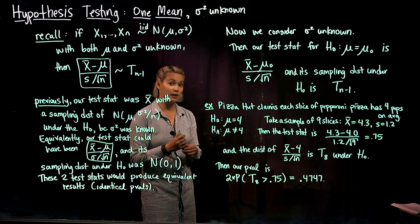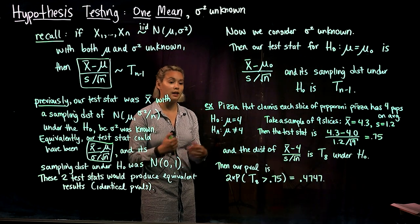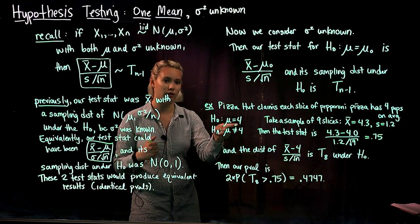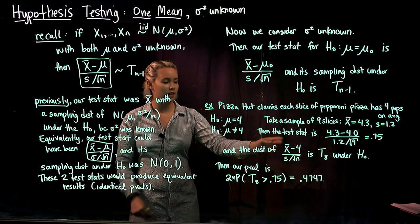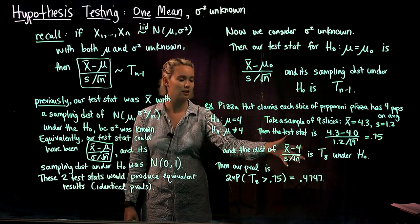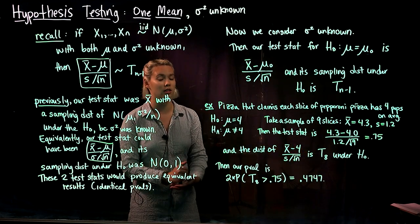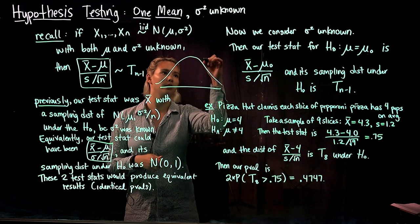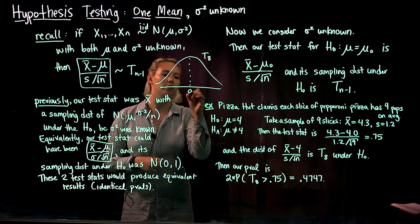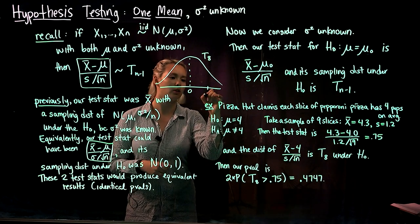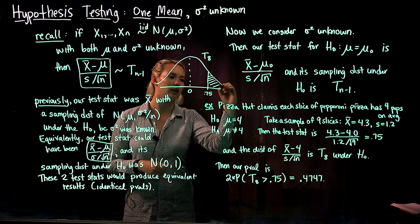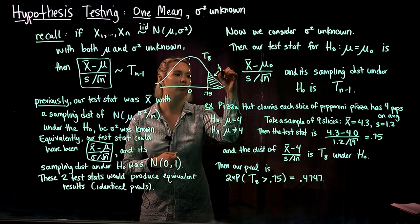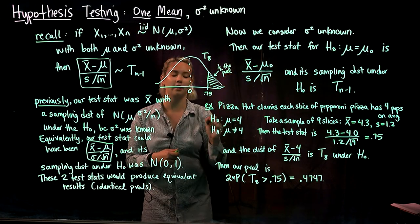We want to calculate the probability of getting a test statistic as extreme or more extreme than 0.75, given that the null hypothesis is true — that is, given that the average number of pepperoni slices per pizza slice equals four. The sampling distribution of our test statistic under the null is a t distribution with n minus 1, or eight, degrees of freedom. Since we have a two-sided alternative, the shaded tail area to the right of 0.75 is only half of our p-value, so we need to find that area and double it.